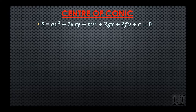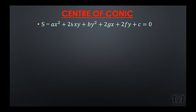For conic we have learned that the general equation of conic is ax² + 2hxy + by² + 2gx + 2fy + c = 0. If this is the conic section, then what would be the center of this conic — and this is what we're gonna find out in this lecture.